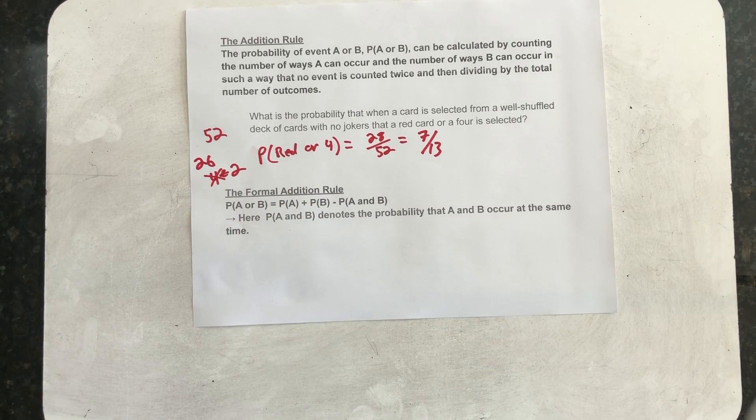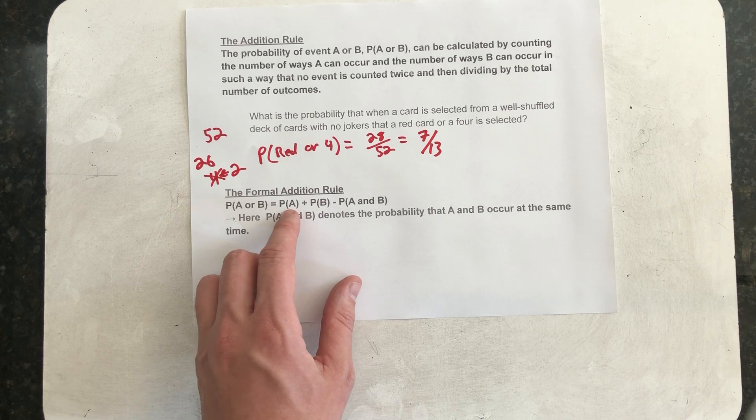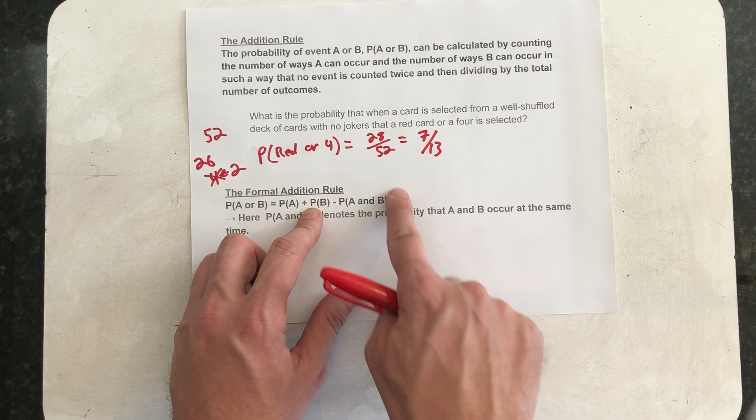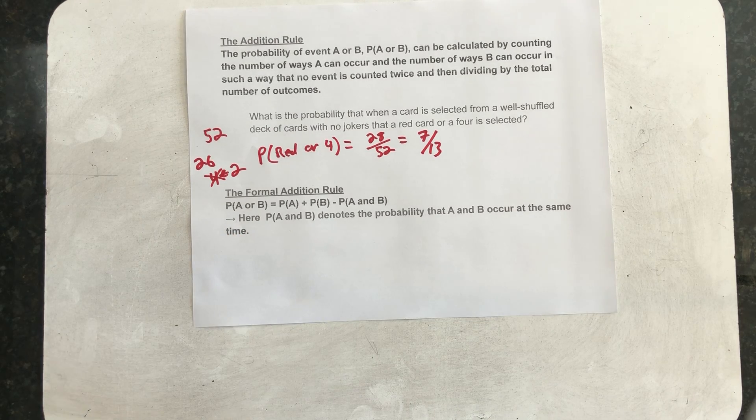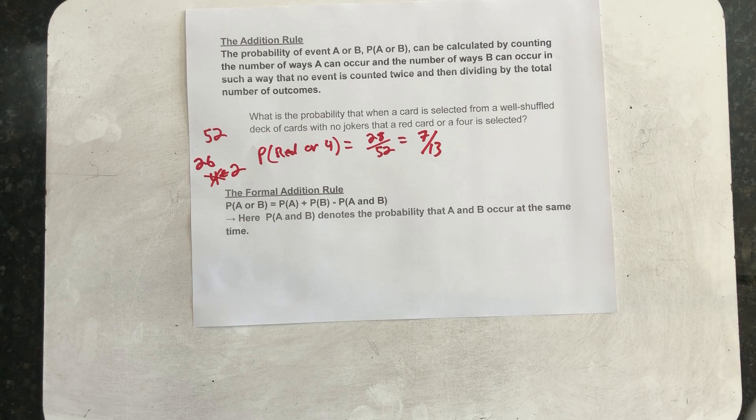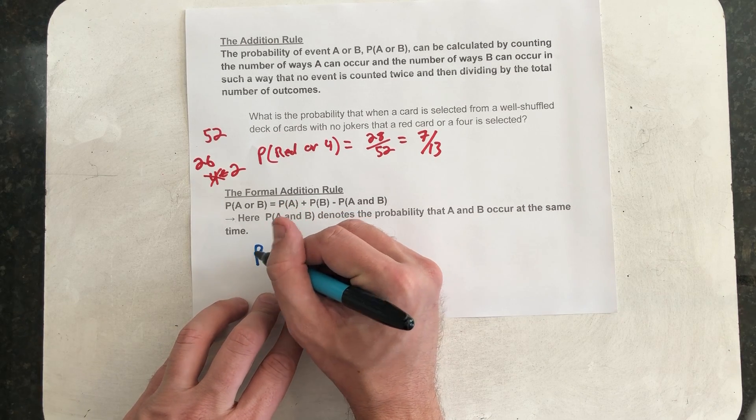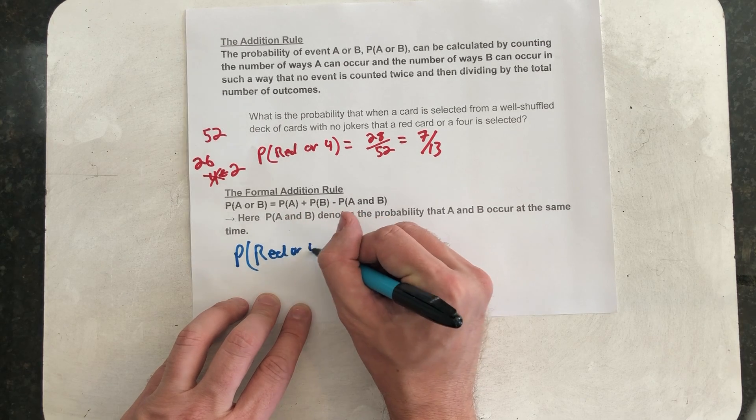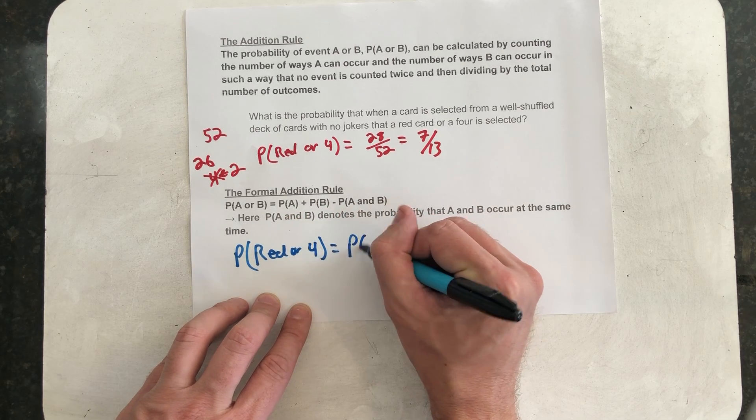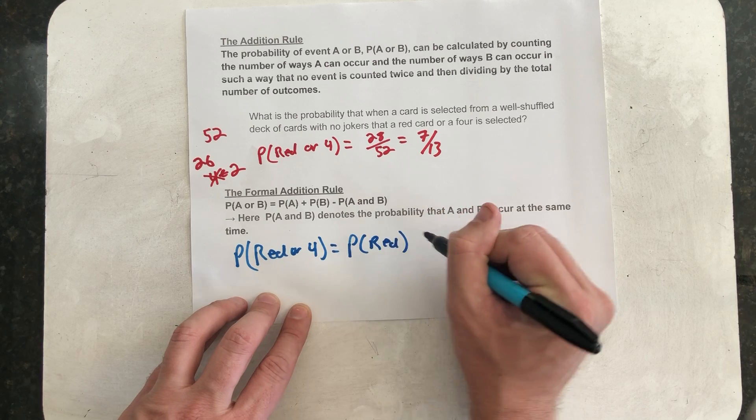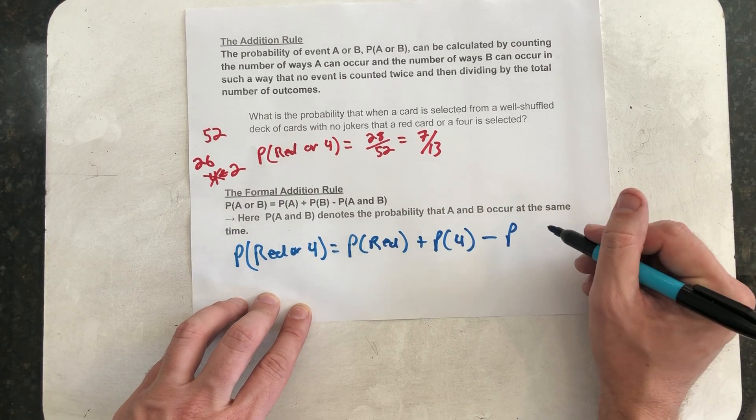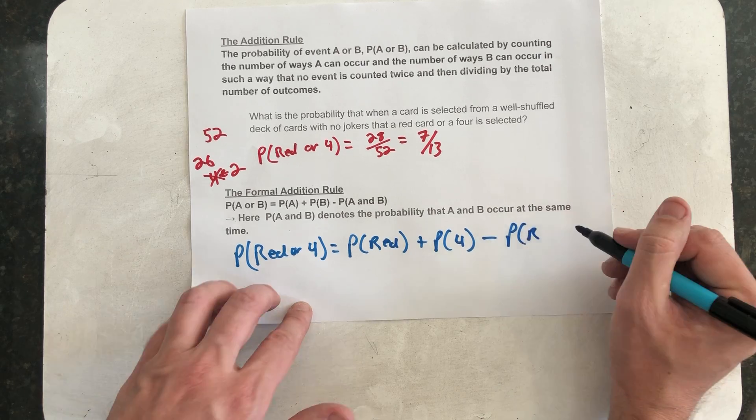The formal addition rule says we could have also calculated that by finding the probability of A, adding it to the probability of B, and then taking away the probability that the two events occurred simultaneously. So, let's take a look at what that looks like. The probability of red or a 4 would then be the probability of red plus the probability of a 4 minus the probability that we have both a red and a 4 at the same time.